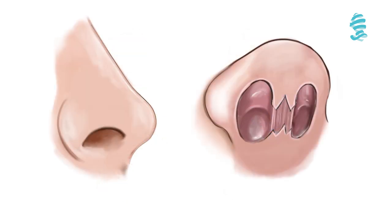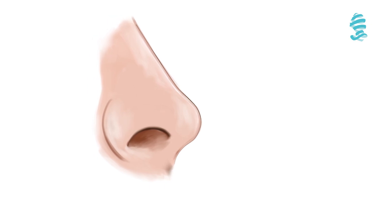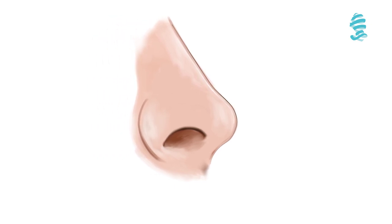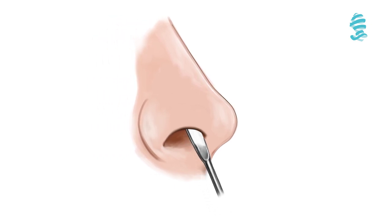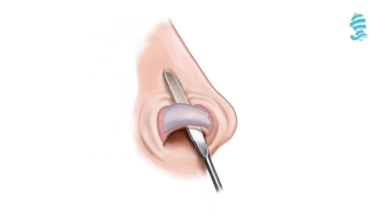In both approaches, the lower lateral cartilage can be exposed for any modification. In the endonasal approach, each lower lateral cartilage is handled separately via each nostril.